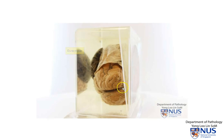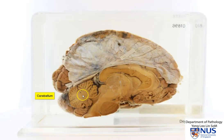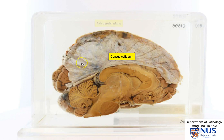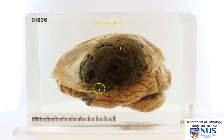And when we turn it around, we can actually appreciate that we're looking at an intact cerebral hemisphere. Here we have the cerebellum. This is the corpus callosum. This is the falx cerebri. Let me turn this back around.